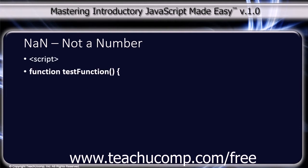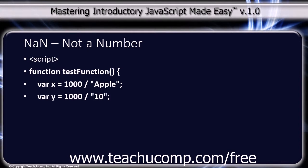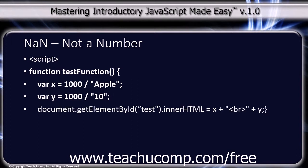Inside the script tag, a function called test is defined. Variable x is set equal to 1000 divided by the string 'apple'. The document.getElementById('test').innerHTML is then set to display x plus a line break tag plus y, followed by the close curly bracket and close script tag.